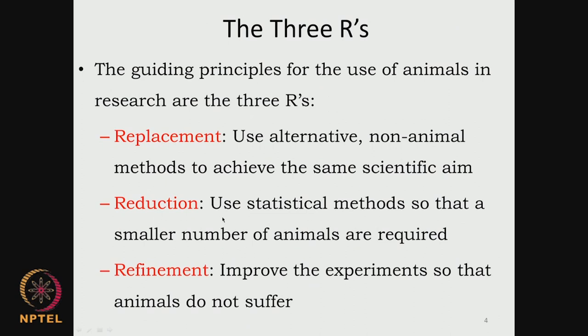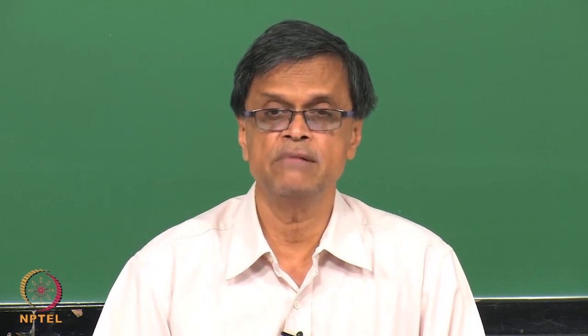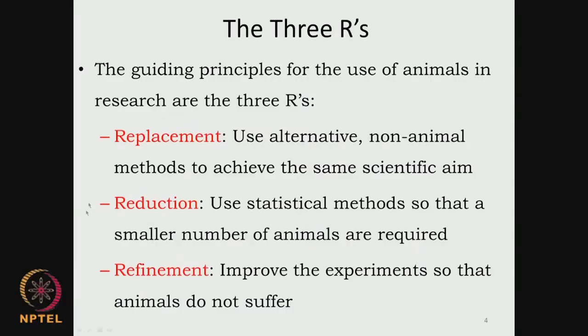Reduction: can we use a less number of animals but at the same time get statistically significant information? Can I use a smaller set of animals? Can I do an implant on 2 sides of the same animal so that the number of animals can be reduced? We need to think about all those — that is called reduction.